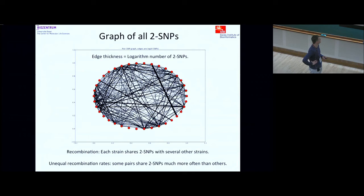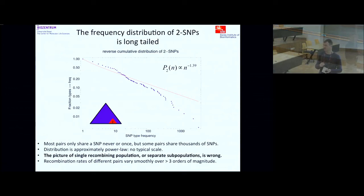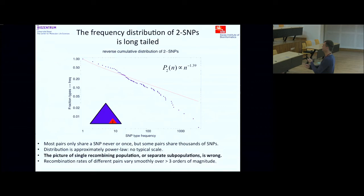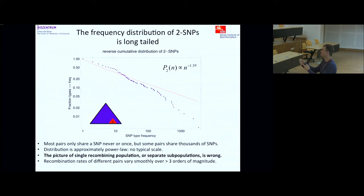I think this is a very important result, because most population genetics models and coalescent theory models assume you start from a population that is equally mixing — all members are identical and interchangeable, maybe with some subpopulations and migration between them. This to me suggests that's already fundamentally a wrong approach. These strains have an identity such that for any pair there is a different recombination rate, and these rates are drawn from a very long-tailed distribution.